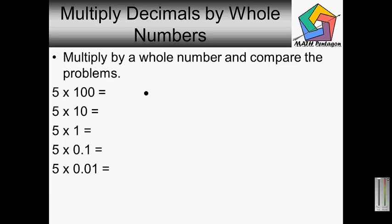Here we want to multiply a whole number and compare the problems. 5 times 100. I don't have to do the multiplication. I could just do 5 times 1 is 5 and add the two zeros, so my answer is 500. 5 times 10 is 50. 5 times 1 is 5.